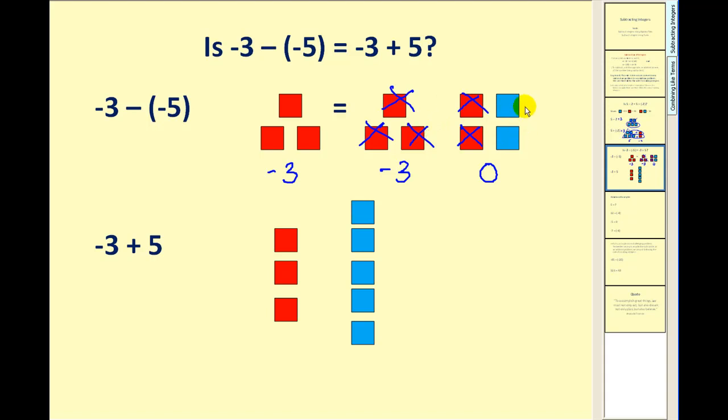And what remains is our answer and we have positive 2. Negative 3 minus negative 5 is positive 2.